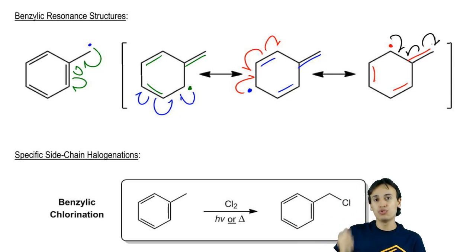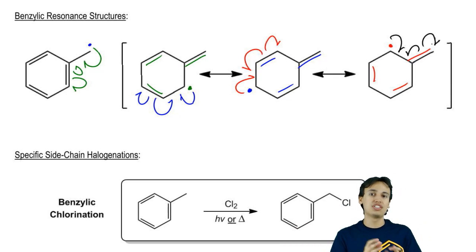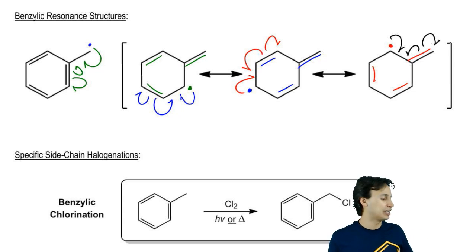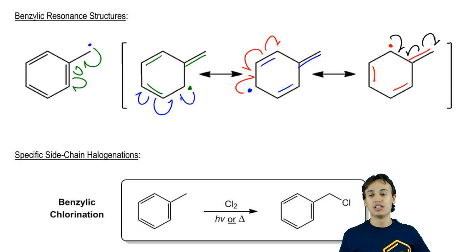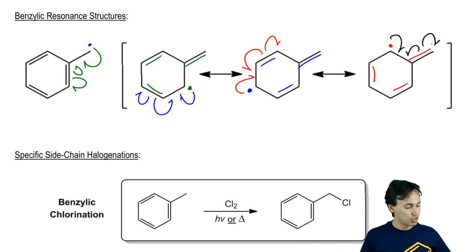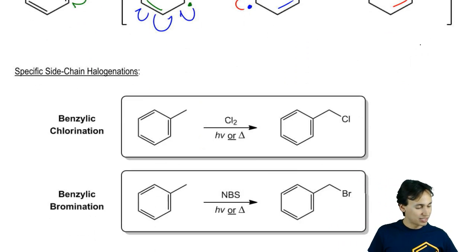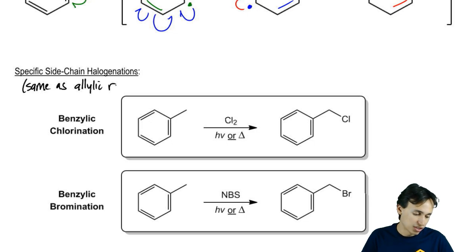Looking back to our conjugation chapter, remember that whenever conjugation was present, special reactions could take place at those conjugated sites. That's exactly what happens here. In fact, these reactions are the identical reactions to allylic chlorination and allylic bromination — the only thing is that we're using a benzylic position instead. You can think of these as simply the same as allylic reactions.